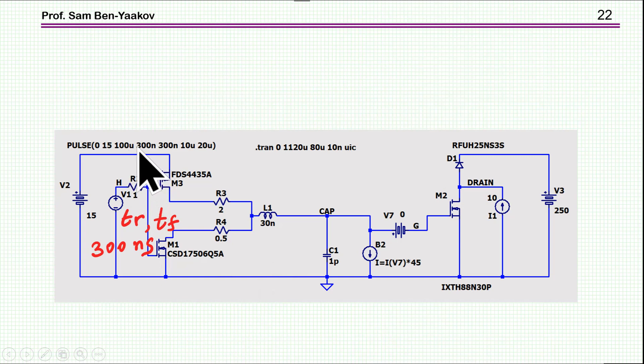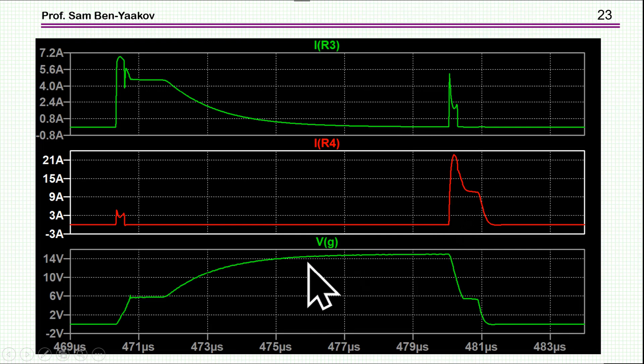Then I've changed the rise and fall time to 300 nanosecond, rather than 100 nanosecond. This is very large, usually you will not expect that slow transition, but just for the sake of testing, I've changed it to the 300 nanosecond. Again, this is the transistor, 45 times the current to the signal unit, and here is what I am getting, very, very similar.